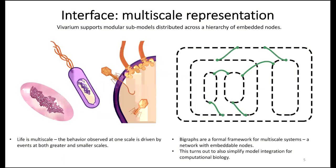To start with the interface, Vivarium supports modules distributed across a hierarchy of embedded nodes. On the left, pointing to the fact that life itself is multi-scale, so the behavior observed at one scale is driven by events that could be much faster and much smaller, but also much bigger and perhaps slower. For example, the cell is driven by events that really matter in its dynamics. Vivarium adopts a framework most of you are probably not familiar with: bigraphs. Bigraphs are a formal framework for multi-scale systems. They're like a network, but bigraphs are networks with embeddable nodes, so you can have one node inside of another. This not only reflects the functional organization of living systems, it also turns out to simplify how models are integrated.